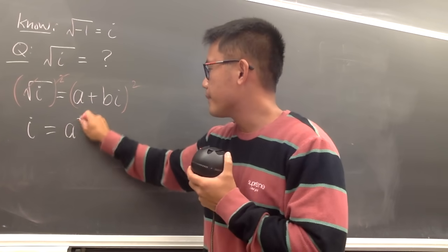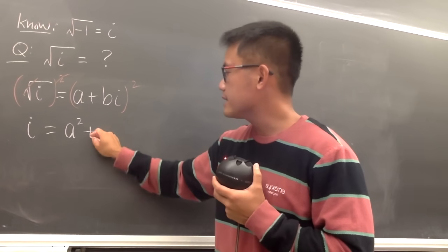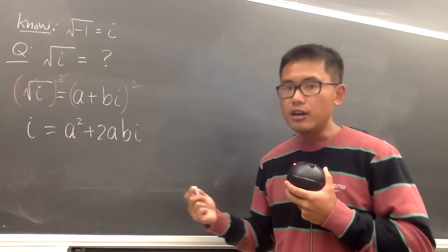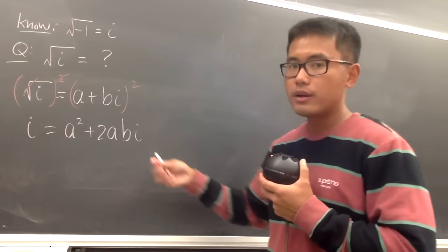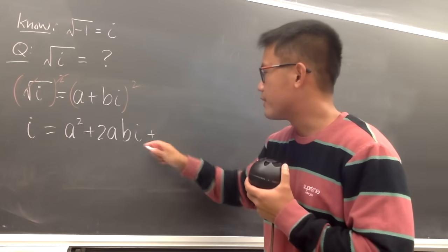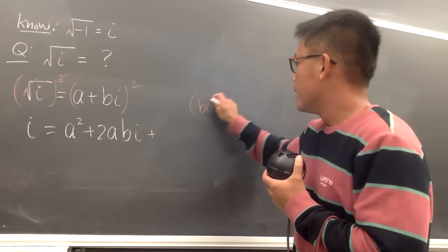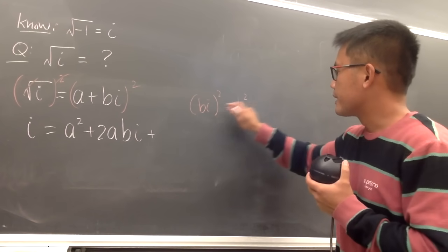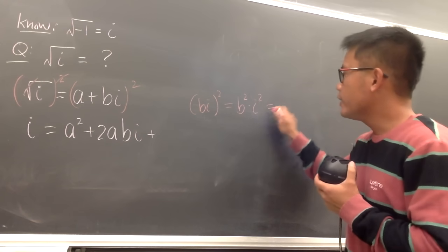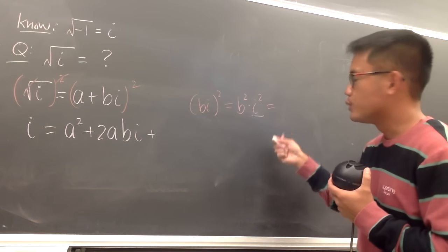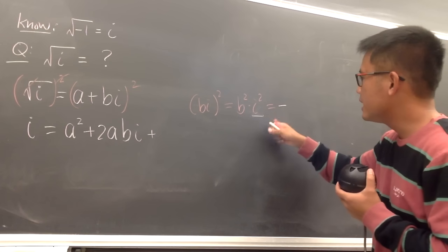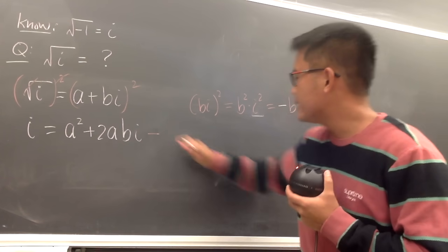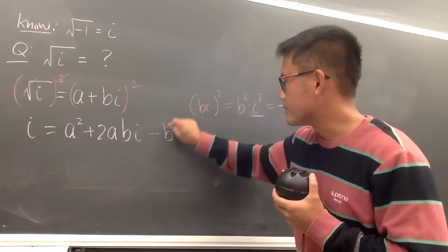Expanding (a + bi)²: the first term is a², the second term is 2abi, and for the third term we take (bi) and square it. That gives b² times i². Since i² equals negative 1, (bi)² equals negative b². So the third term is not plus b² but minus b².